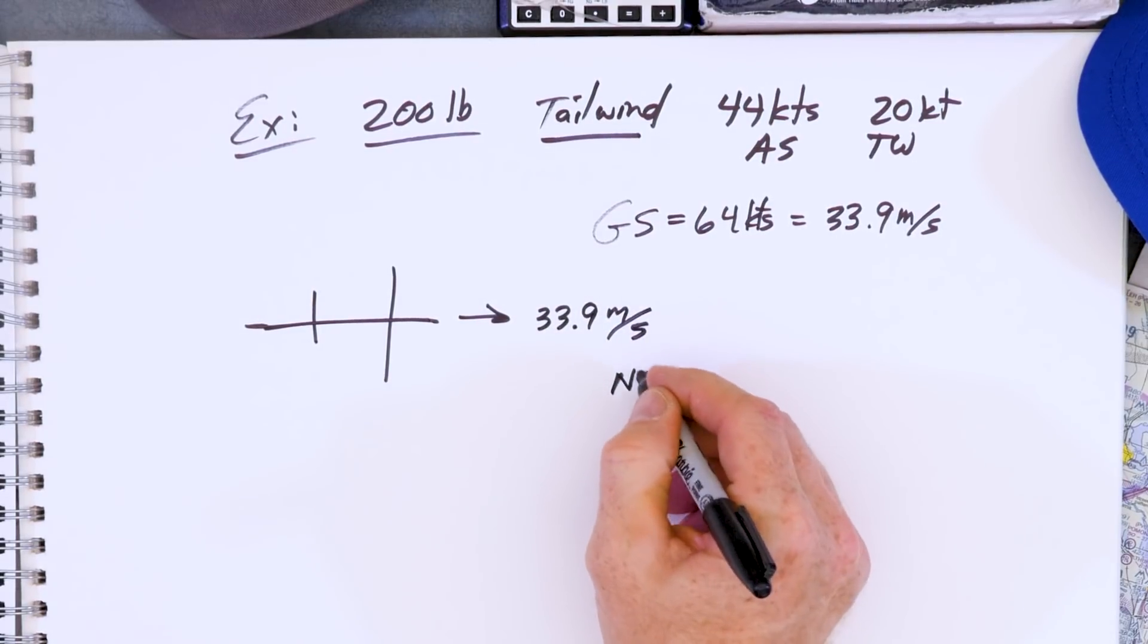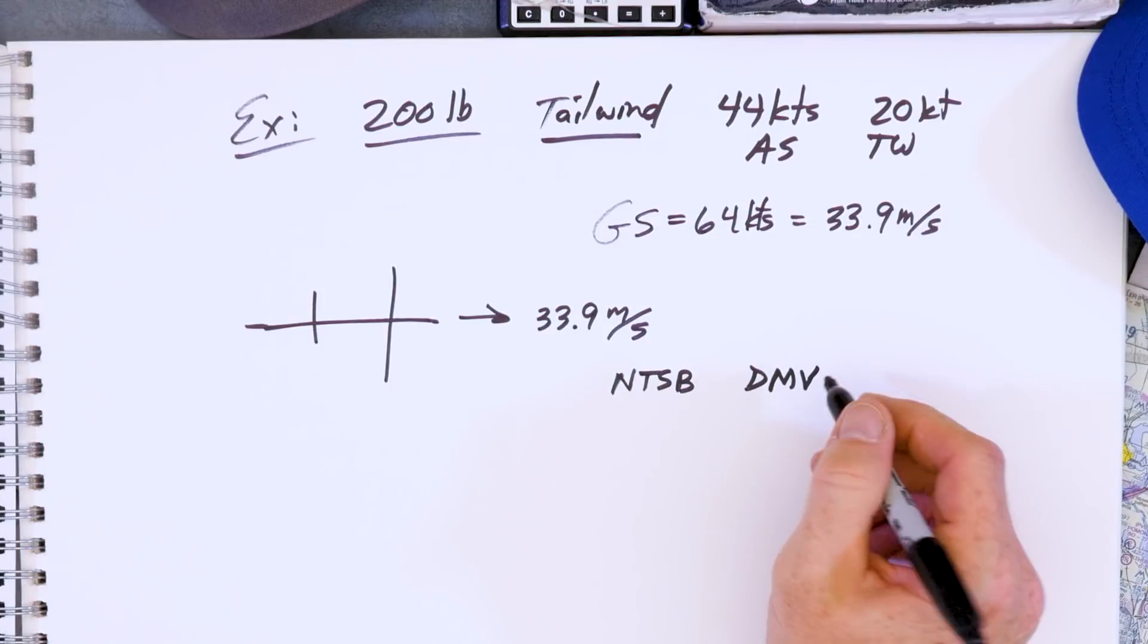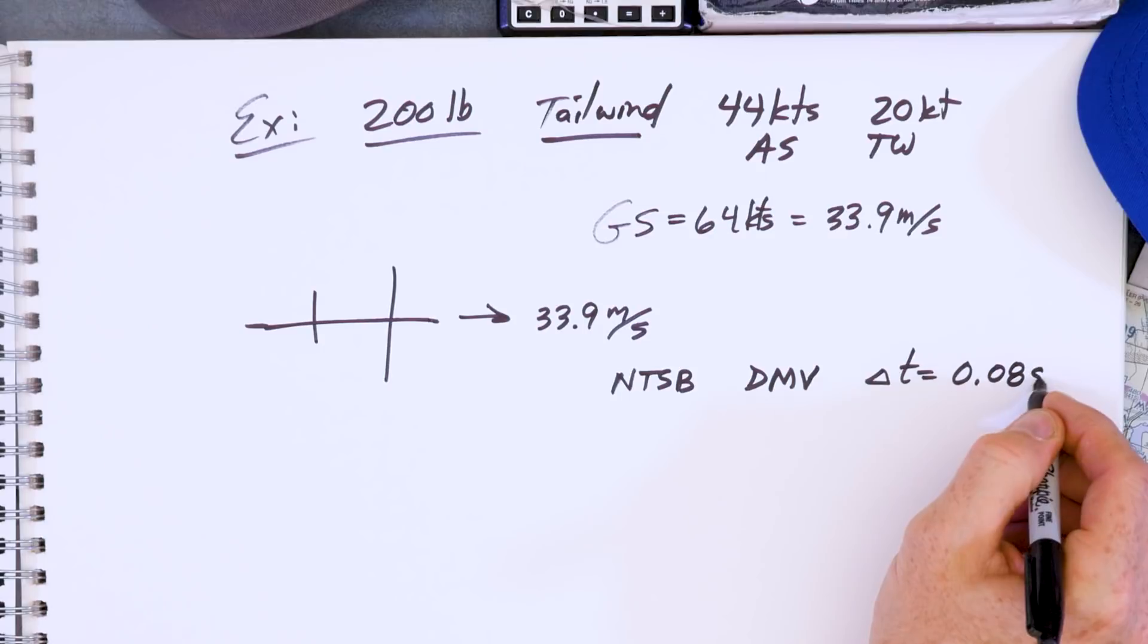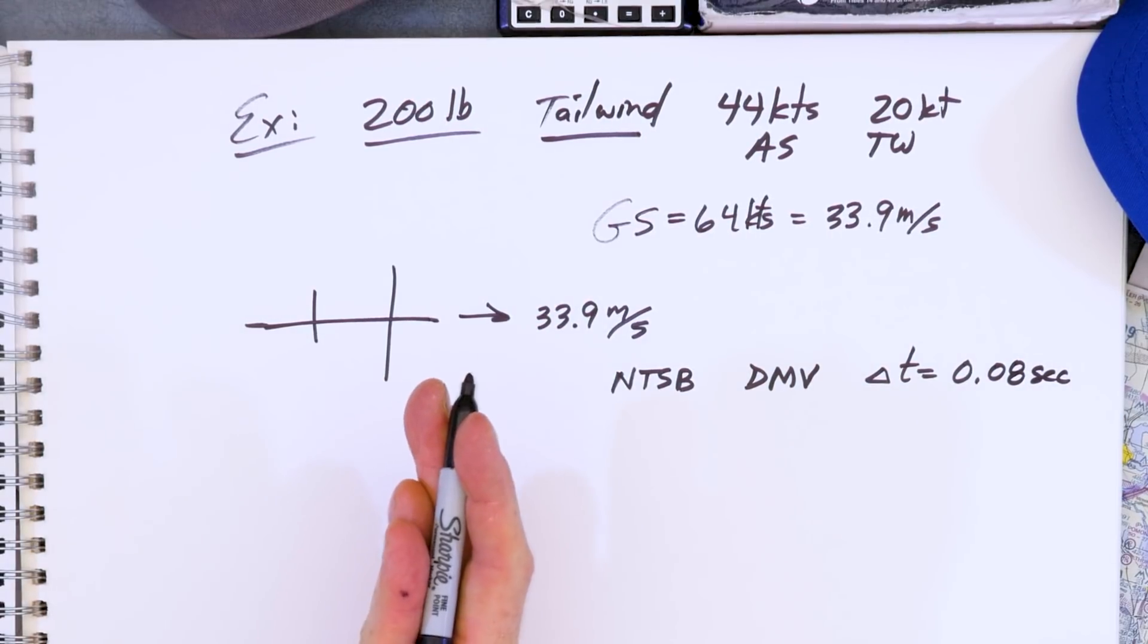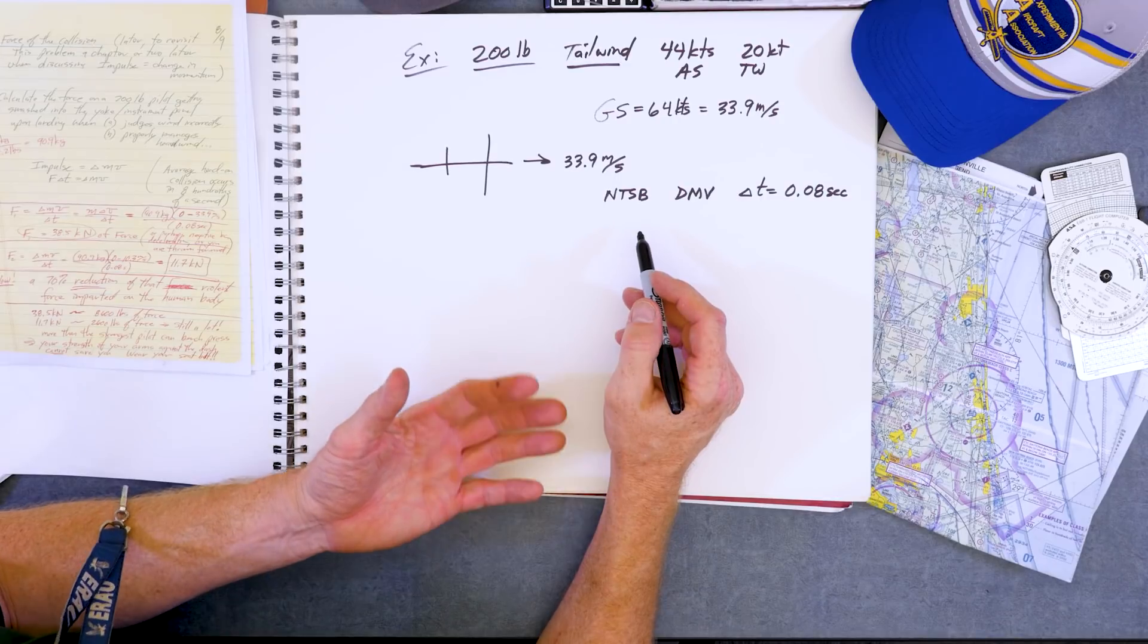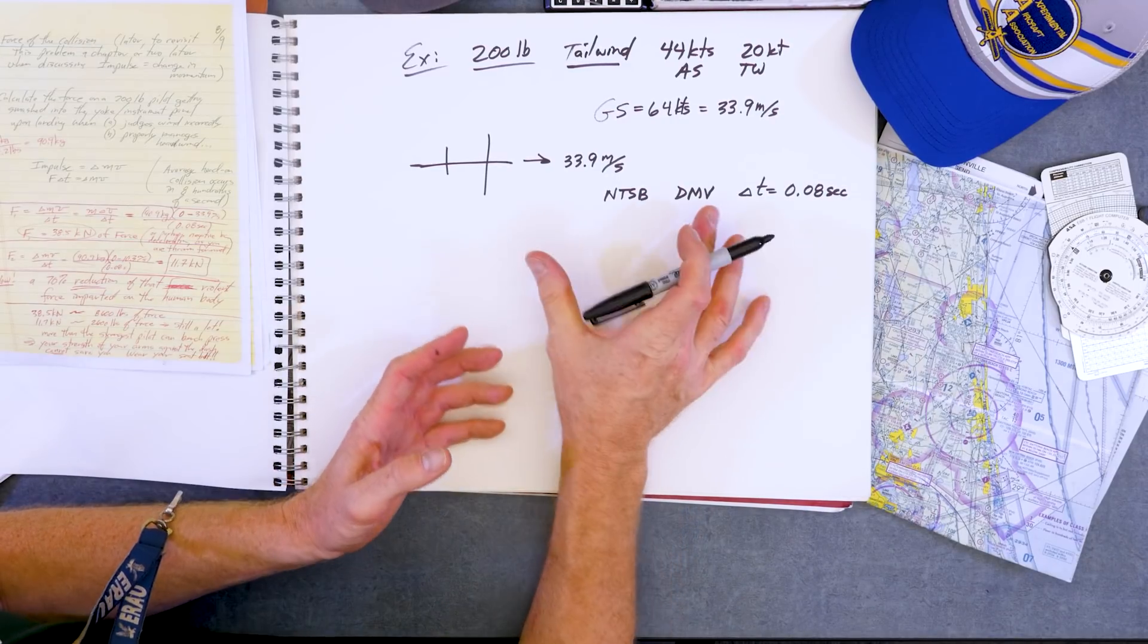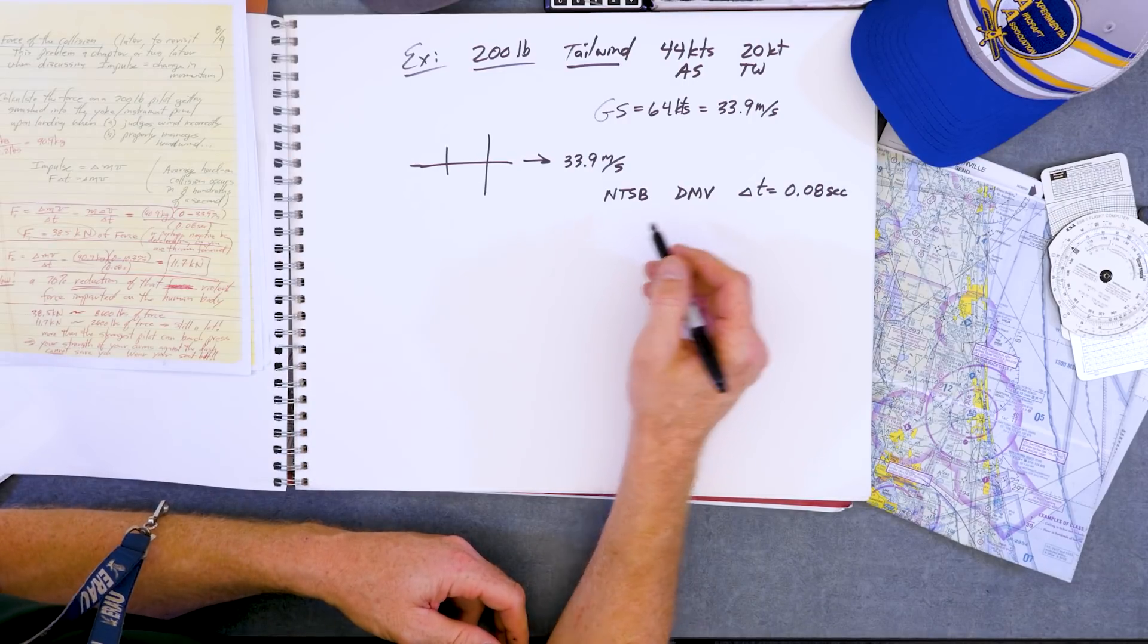The NTSB reports and Department of Motor Vehicles, DMV reports for a few states I looked up, said the average time of a collision is eight one hundredths of a second. What does this mean? This means from the time the car or the airplane first strikes the barn or the brick wall or the tree until the time everything crunches and comes to rest. And this is what engineers have done since the 1957 Chevy. Modern vehicles have what's called a crumple zone and cause it to crumple with a larger amount of time, which reduces the force of that collision.